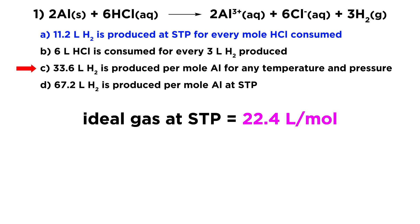Let's look at C. 33.6 liters of H2 is produced per mole of aluminum for any temperature and pressure. This is not going to work because this aspect regarding 22.4 liters per mole is specific to standard temperature and pressure. It is only under these conditions that we can use this. So C is also not going to work.